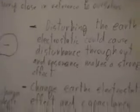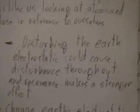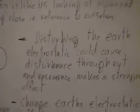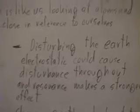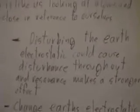Looking at the universe astronomically, the Earth and solar system are very close together — like atoms and molecules relative to ourselves. Tesla also said that disturbing the Earth's electrostatic field could cause effects throughout it, and resonance makes the effect stronger. This is essentially what he predicted before Colorado Springs and Wardenclyffe — he ended up disturbing the electrostatics of the Earth and sending energy through it to all points, around 1889, when he was demonstrating the One Wire Principle.